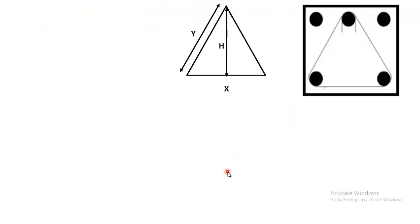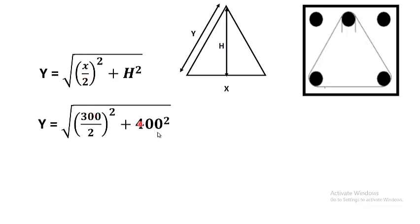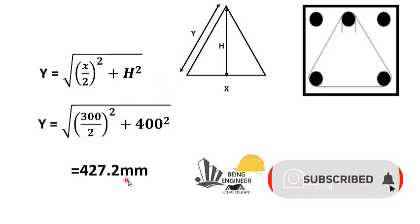So now to find the hypotenuse of a triangle, we will use the Pythagoras theorem which says that hypotenuse is equal to base square plus perpendicular square under the root. Now here we are considering it a right angle triangle, so we divided the base into half, that is x divided by 2. So by putting the values of x and h, that is height of a triangle or perpendicular of a triangle, we will get this hypotenuse which is 427.2 mm.